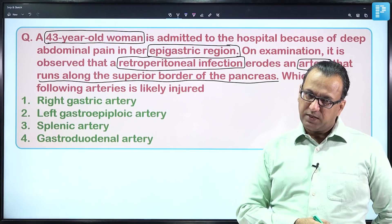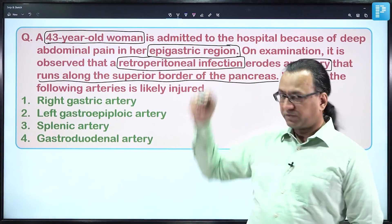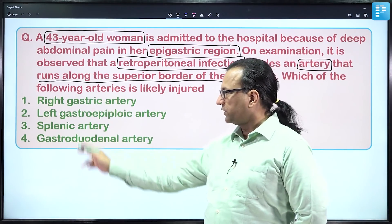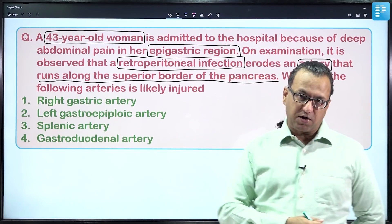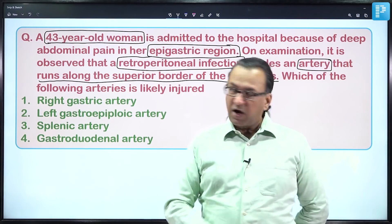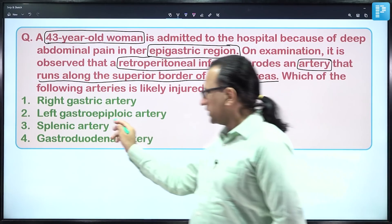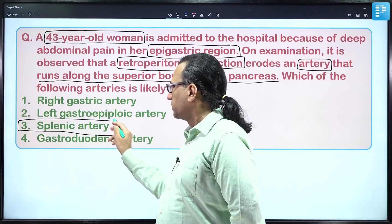This artery supplies not only the spleen but also the pancreas and foregut derivatives like the stomach. The options are all branches from the celiac trunk. As I mentioned, the artery running along the superior border of the pancreas is the splenic artery. Your answer should be choice number three.